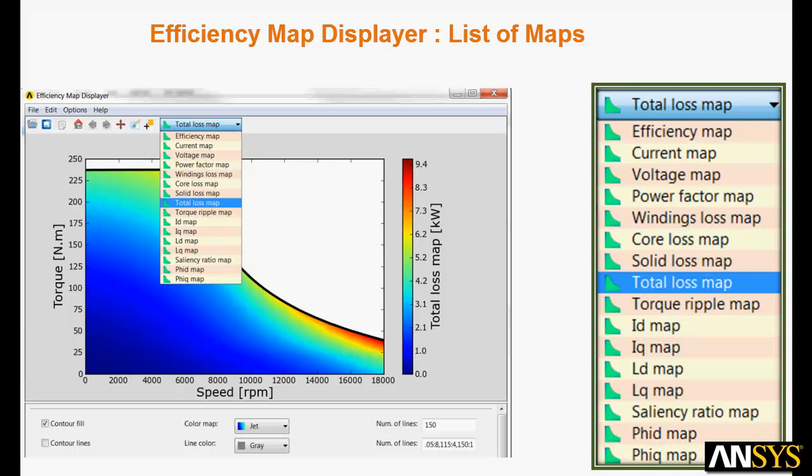An intuitive displayer is included with the design kit. A simple pull-down menu provides you immediate access to many maps including efficiency, current, voltage, power factor, core loss, and many others.